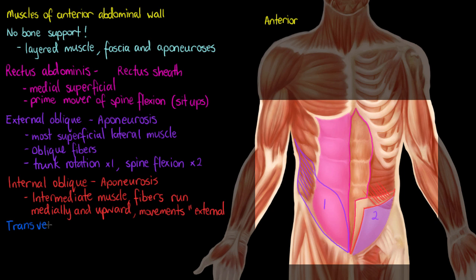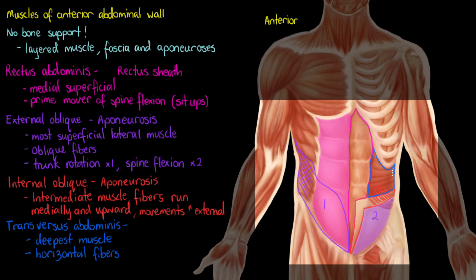Now we've reached our last and deepest muscle: the transversus abdominis, outlined here in blue. It is our deepest muscle — so the deepest within our body and closest to our internal organs. Its muscle fibers are going to be running horizontally, which is completely different to our other muscles. To summarize: the rectus abdominis fibers run vertically; the external oblique fibers run medially and downward; the internal oblique fibers run medially and upward; and the transversus abdominis fibers run horizontally.